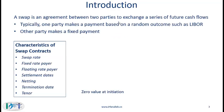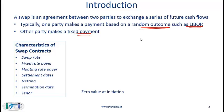A swap is an agreement between two parties to exchange a series of future cash flows, or we can say swap future cash flows. Typically one party makes a payment based on a random outcome or a variable such as a floating interest rate — LIBOR being perhaps one of the most popular floating rates — and the other party makes a payment based on a fixed rate. This variable payment could also be an equity return, a currency rate, and so on. We'll see several examples of swaps as we cover this reading.